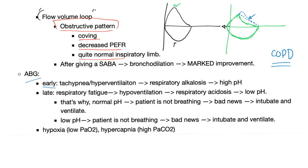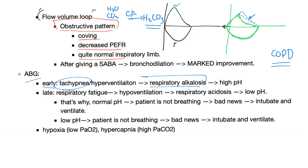Let's talk about arterial blood gas. Early in asthma, the patient is tachypneic — the respiratory muscles are still healthy. This leads to respiratory alkalosis because the patient is washing out CO2. CO2 is an acid: add water and carbonic anhydrase and CO2 becomes H2CO3, carbonic acid. When you lose CO2, you lose acid, and you end up with alkalosis and increased pH.